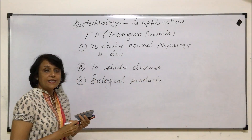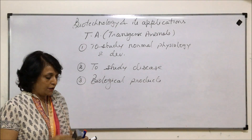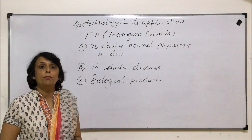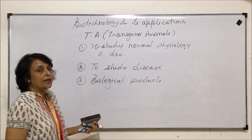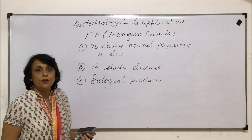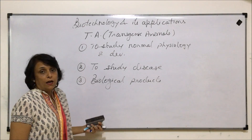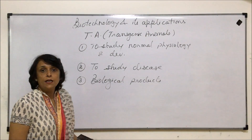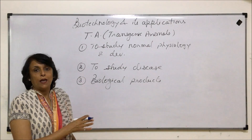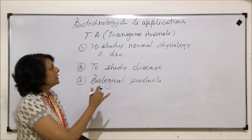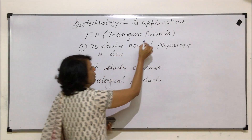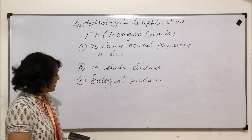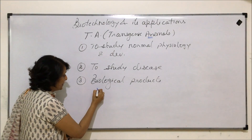Let's take a couple of examples of biological products obtained using transgenic animals. If we use the term transgenic organisms, then even E. coli would come here, but since we are talking about animals, we will take the example of higher animals.